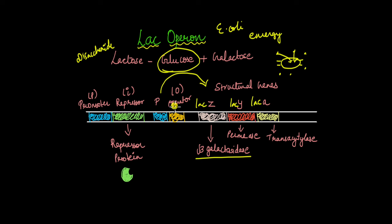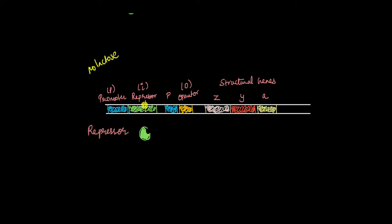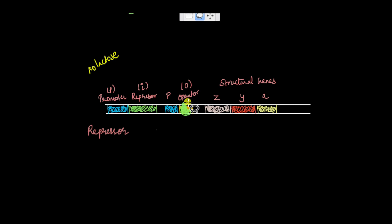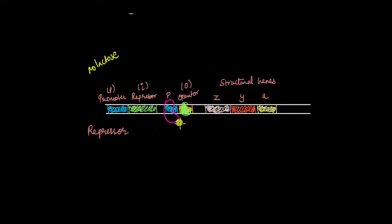There is another region known as the operator region — like I said, this is like the master switch for the promoter. This is where the repressor protein comes into the picture. When lactose is not present, the repressor protein is synthesized. It goes and binds to the operator region of the lac operon. When the repressor protein is bound to the operator region, RNA polymerase can no longer initiate transcription of the three structural genes. So no protein is synthesized when lactose is absent — it makes sense, because when there is no lactose present, these three genes need not be expressed. This is a mechanism to conserve energy.